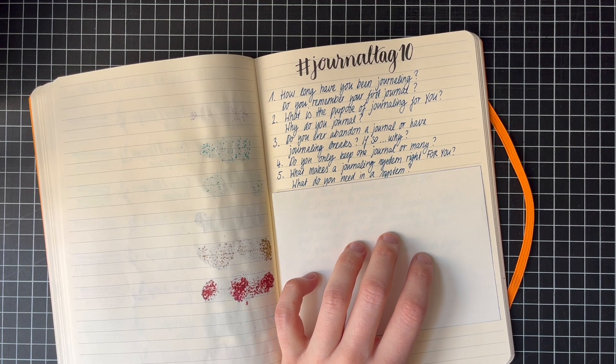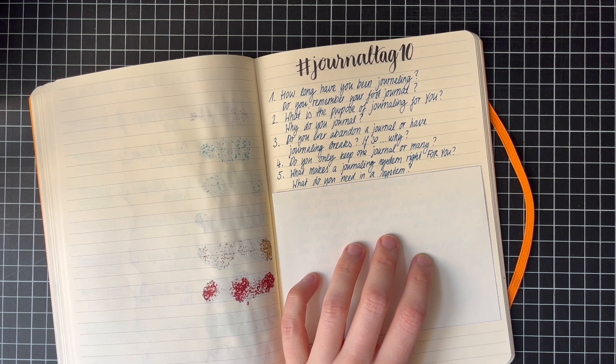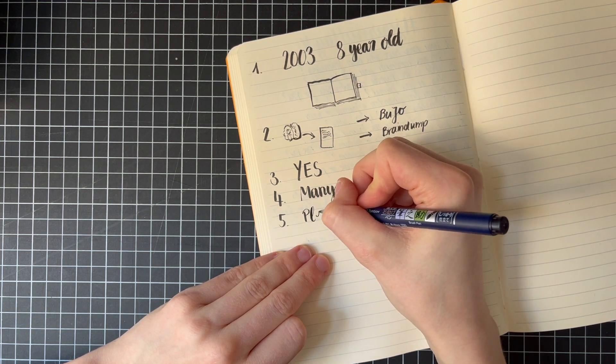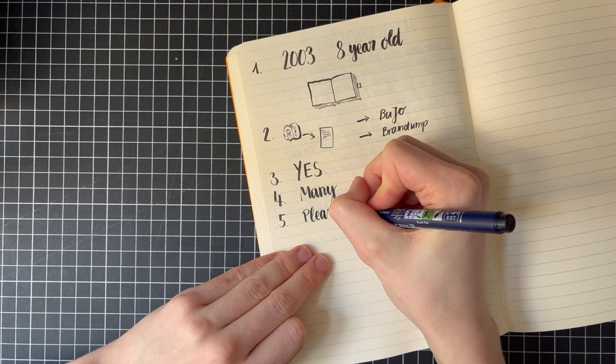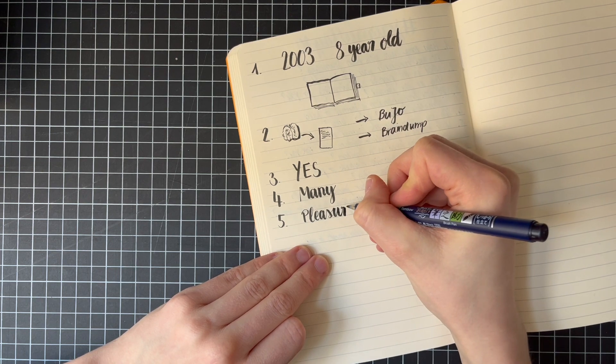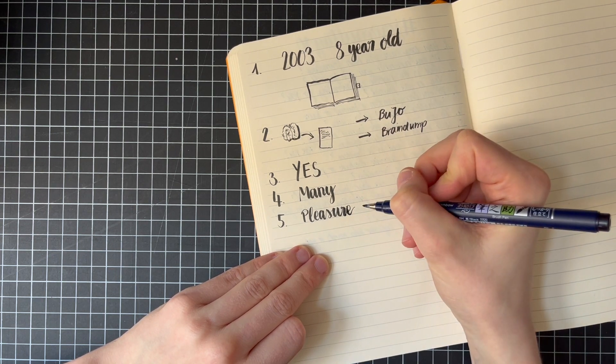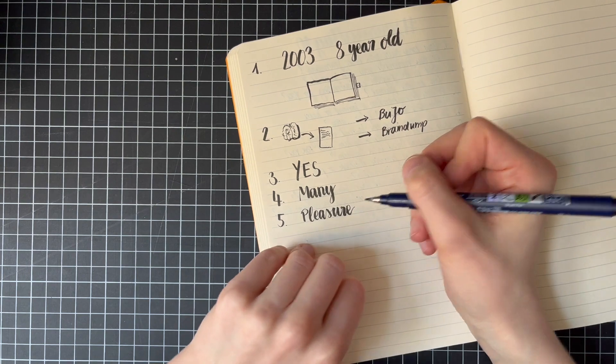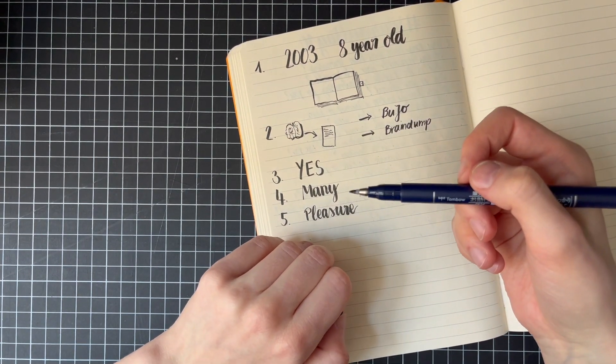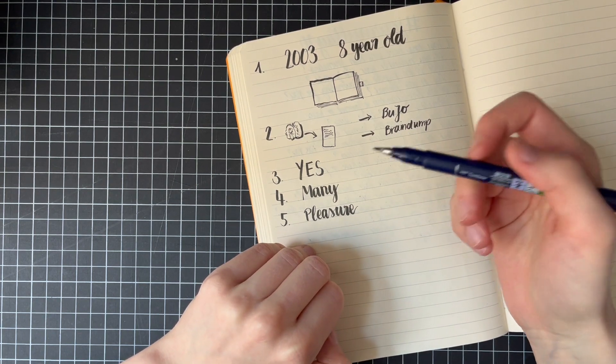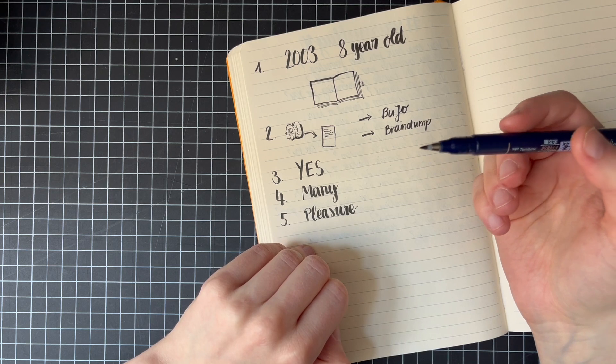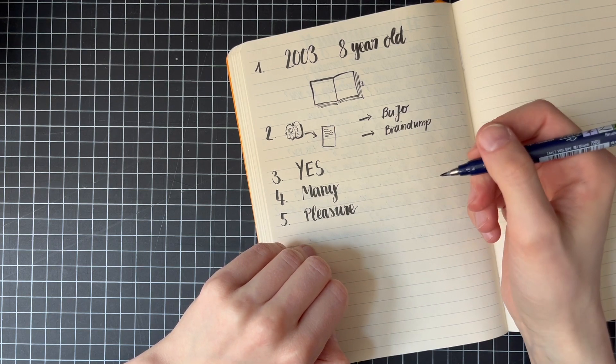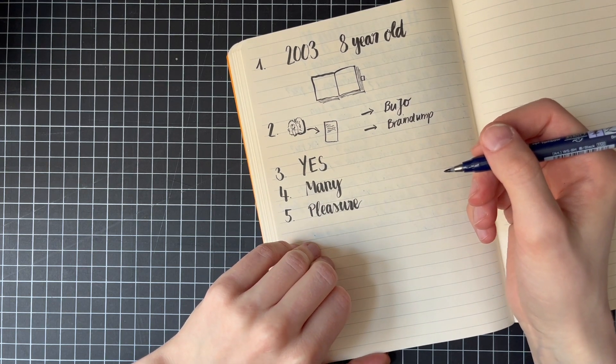What makes a journaling system right for you? What do you need in a journaling system? I definitely need a pleasurable, expressurable experience. For me, it's important that I have good paper, that I have a good pen, that I have supplies that work, and that I like to use. For me, these are tools. And tools, I think, for me, need to be of good quality. So yeah. Everything for the pleasure in this case.